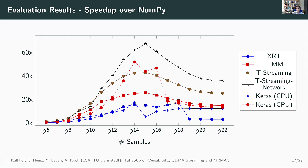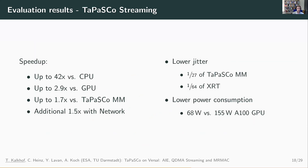In addition to the speedups mentioned, we see that our Tapasco streaming variant has much lower jitter in runtimes than Tapasco memory-mapped and also XRT. So we have more deterministic runtimes, and we have lower power consumption than the GPU — almost cutting the consumption in half.